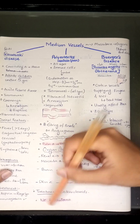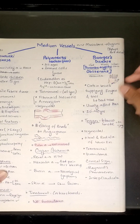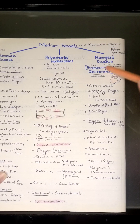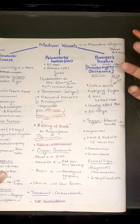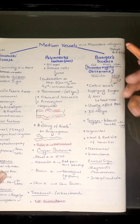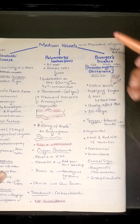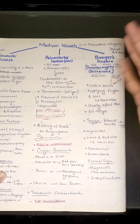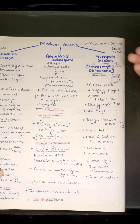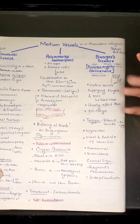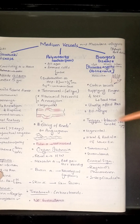Buerger's disease, also known as Thromboangiitis Obliterans: 'thrombo' means clot, 'angi' means vessels, 'itis' means inflammation, and 'obliterans' means obstruction. There is a clot in vessels supplying the fingers and toes, leading to tissue death. It usually affects men between 20 to 40 years of age. The basic trigger of Buerger's disease is tobacco smoke.